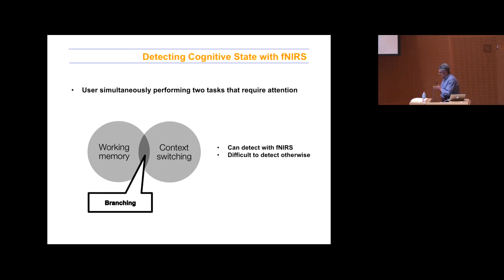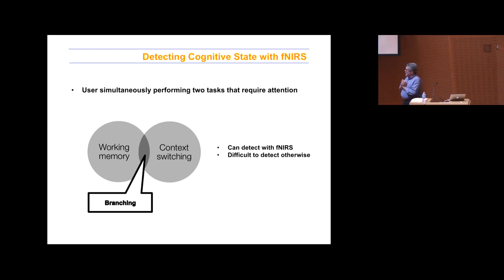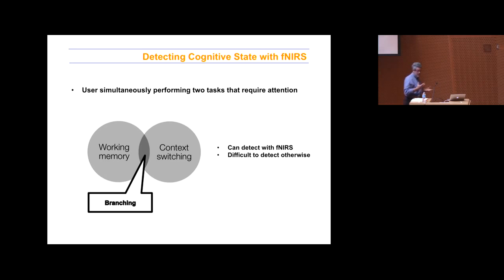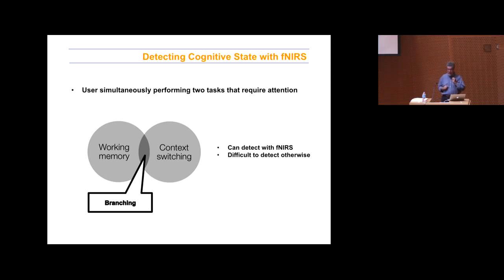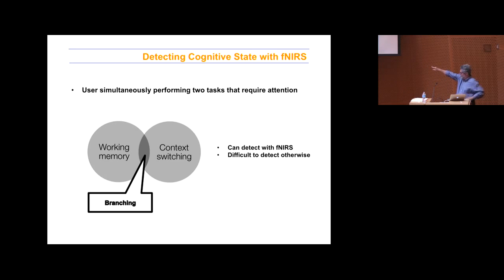Here's another one — my student Erin Solovey did this. She was looking at measuring multitasking or interruption. There are two kinds of interruptions: one kind, you're doing a stupid repetitive task and if interrupted you can go right back to it, no problem. Another kind, you're doing something with some context — like writing a computer program — and if interrupted it'll cost you something. Apparently you can measure this at the moment of the interruption. It's almost like a context switch where you have to put some stuff in short-term memory to get back to it.